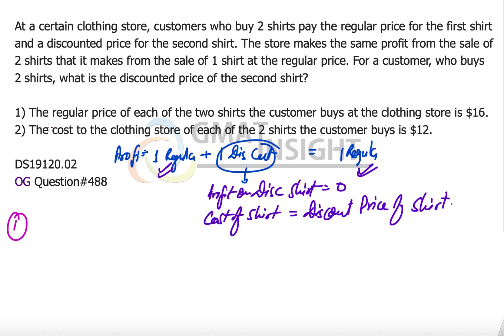Now the first statement says that the regular price of each shirt is equal to $16. But that's not what we need to answer the question. What we need is either the cost price of the shirt, because that will be equal to the discounted price, or we need to know how much discount on a shirt has been given. But the first statement does not supply us the required information, therefore the first statement is not sufficient.